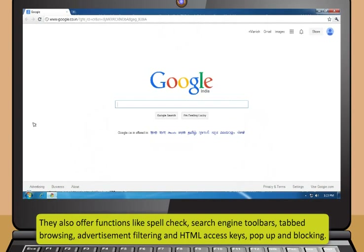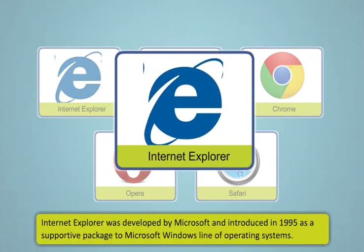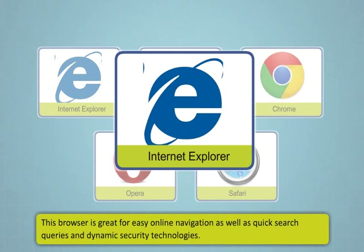Now, let us learn about the different types of web browsers. The different types of web browsers are Internet Explorer, Firefox, Chrome, Opera, and Safari. Internet Explorer was developed by Microsoft and introduced in 1995 as a supportive package to Microsoft Windows line of operating systems. This is the most commonly used browser in the world. This browser is great for easy online navigation as well as quick search queries and dynamic security technologies.